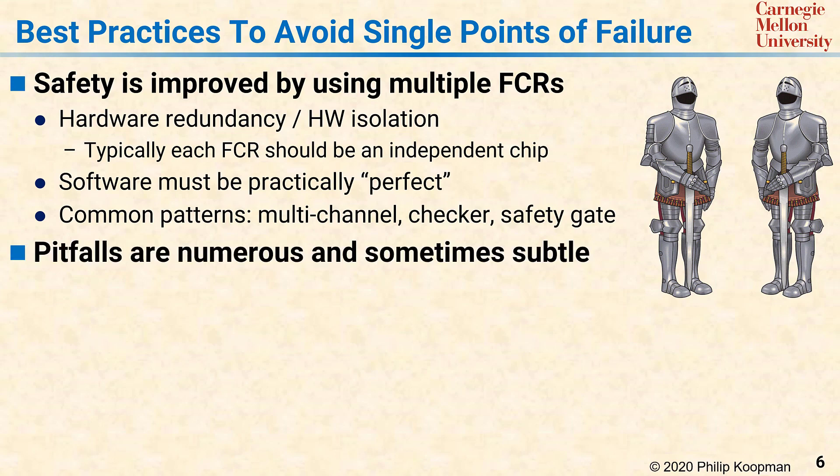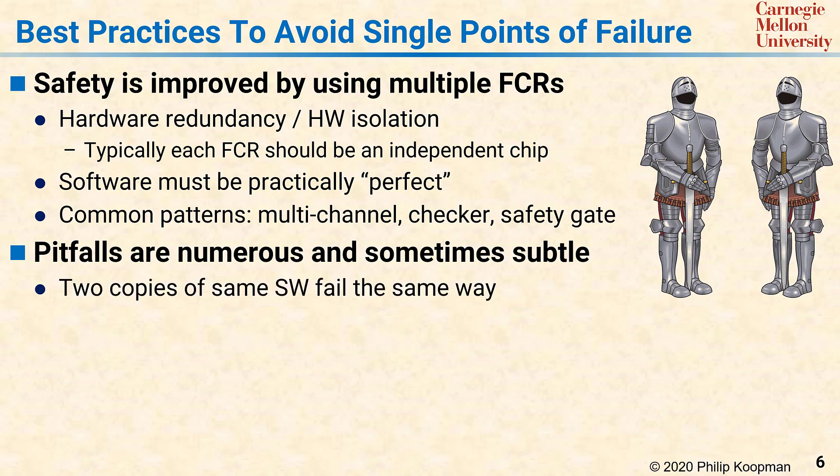The pitfalls in avoiding single points of failure are numerous and sometimes quite subtle. Some big ones include: two copies of the same software, or even just similar software, will often fail in exactly the same way because they have the same software bugs. Thus, you cannot assume independence of software failure without special effort. For practical purposes, the best way to deal with this is usually to use a high safety integrity level engineering process to make sure your software is perfect for practical purposes.